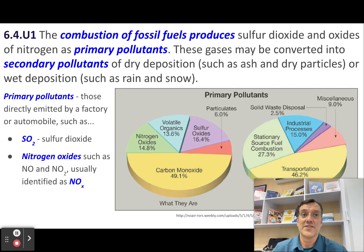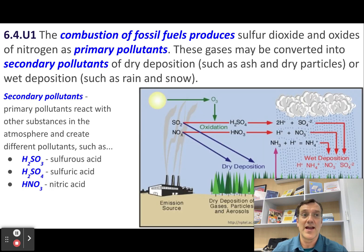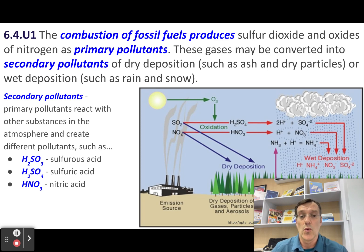These acids can then fall to the earth as dry deposition — such as ash and dry particles — or as wet deposition, that's rain and snow.